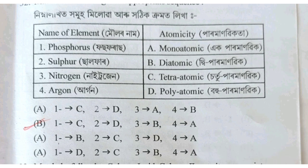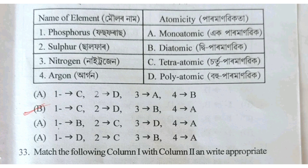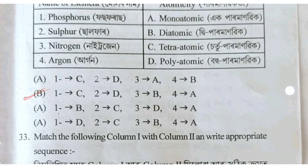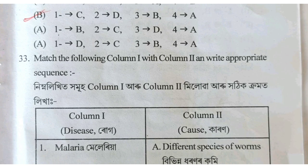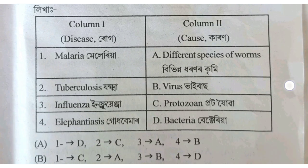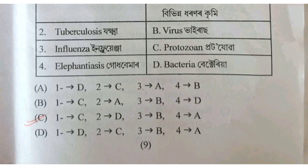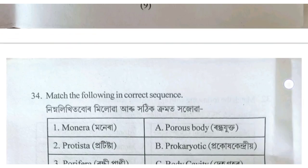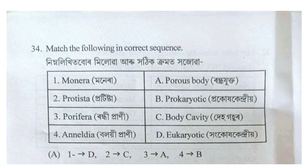Alpha particles are the heaviest radioactive emission. Nitrogen undergoes radioactive decay. The correct column matching gives option C as the answer sequence.